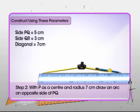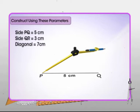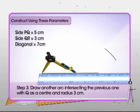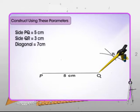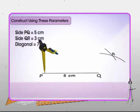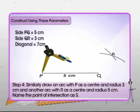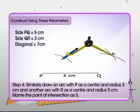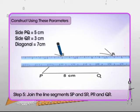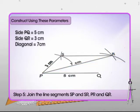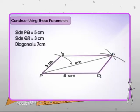With P as center, draw an arc of radius 7 centimeters. Draw another arc intersecting this arc from point Q as center and radius 3 centimeters. Let the point of intersection be R. So three vertices P, Q, and R of the parallelogram are in place. For the fourth vertex S, draw an arc of radius 3 centimeters from point P, and another arc from R as center with radius 5 centimeters. Join the line segments SP, SR, PR, and QR. Parallelogram PQRS is the desired parallelogram.